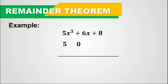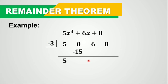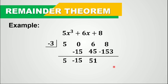So we have here 5, then 0 since there is no x squared term, so we put 0 in that position, then 6 and 8. We divide by negative 3. Let's bring down 5. So 5 times negative 3 is negative 15. So 0 plus negative 15 is negative 15. Negative 15 times negative 3 is positive 45. So 45 plus 6 is 51. So 51 times negative 3 is negative 153. And negative 153 plus 8 is negative 145. So this is the remainder, which we determined using the remainder theorem.